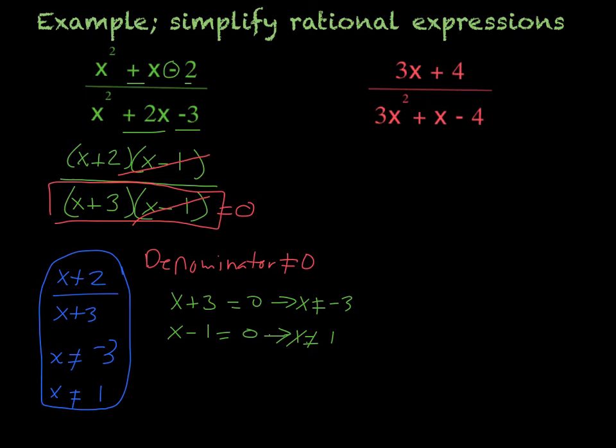For this next one, we have 3x plus 4 over 3x squared plus x minus 4. So first thing, we're going to try to factor. Obviously, there's nothing we can factor on the top, so the numerator is going to stay the same as 3x plus 4.